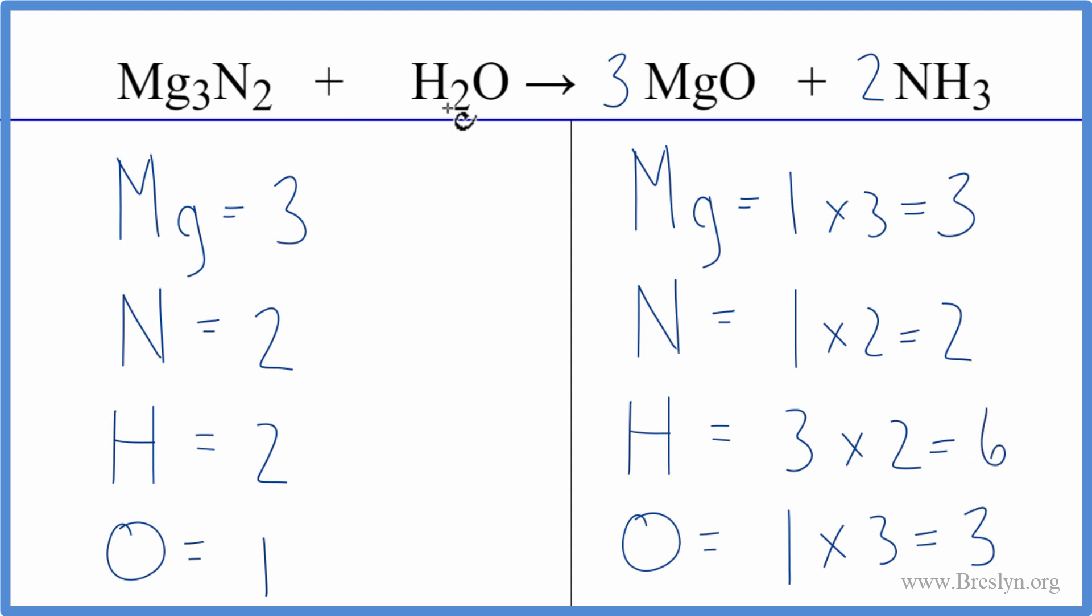Let's change the coefficient in front of the water, and we'll balance the hydrogens first. I think that'll balance everything. We have two here and six here. So three times the two. That'll give us the six. So we've balanced the hydrogens.